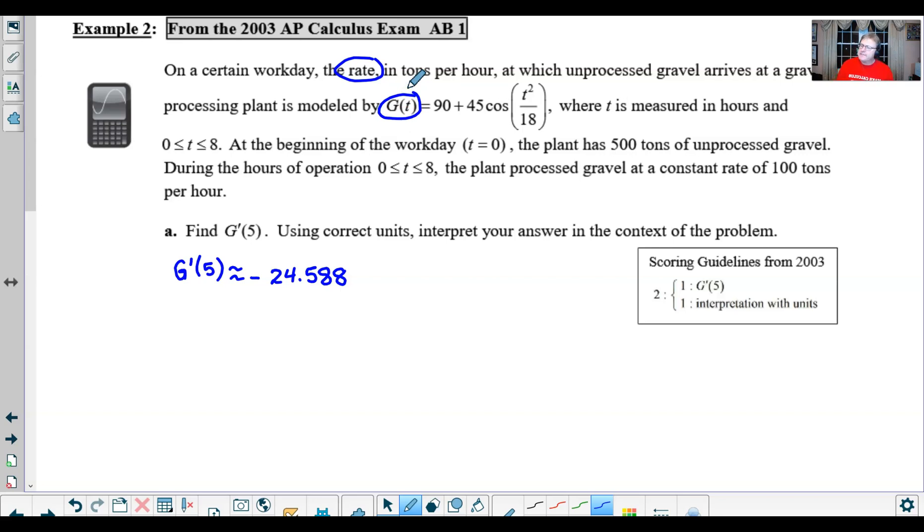When we take the derivative of this rate, we have to think about what does that do with the units, because the units are already tons per hour. But by taking the derivative, we have shown how that changes over time, and therefore we have another denominator per hour or a denominator of hours.